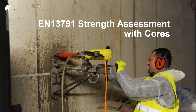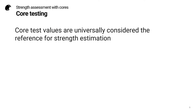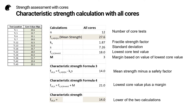Let us begin by looking at the strength assessment with cores. Core test values are universally considered as the reference for strength estimation. Here we can see the result if we calculate the characteristic compressive strength for this set of raw data using all of the core test values available. Two calculations are required. The first uses the mean strength of all the cores and subtracts an amount based on the standard deviation and a constant to give the required safety factor. The second simply uses the lowest core value and adds a margin. The characteristic compressive strength is the lower of these two values. It is interesting to note that in this case it is significantly lower than any of the measured core values.